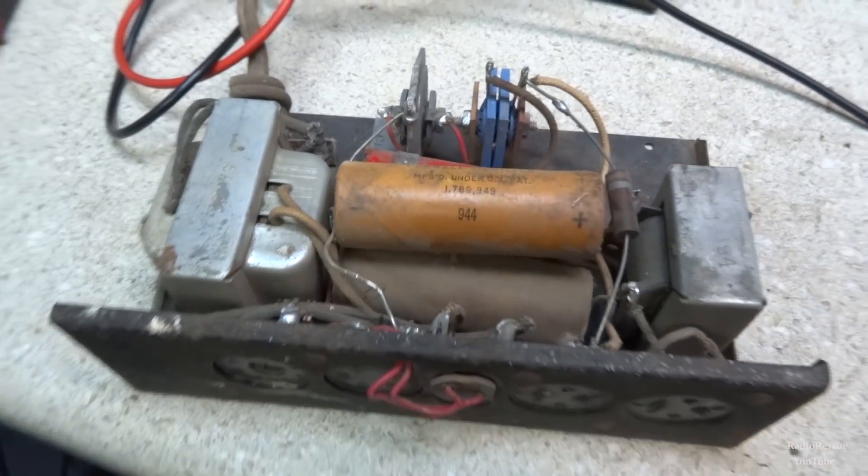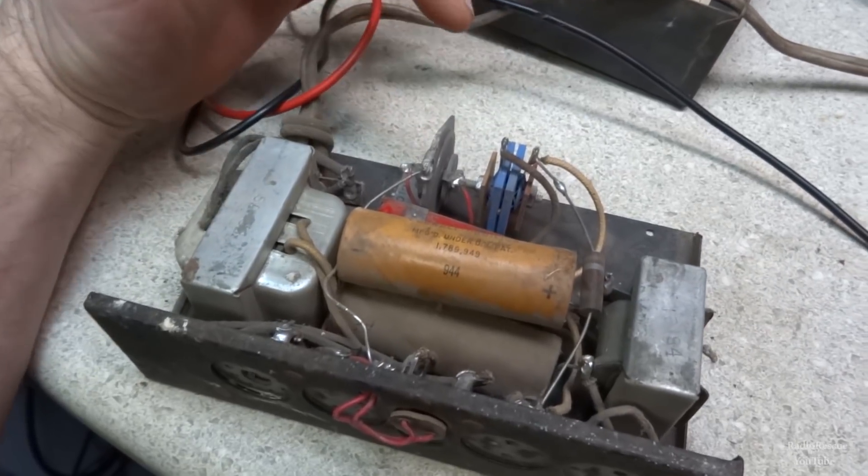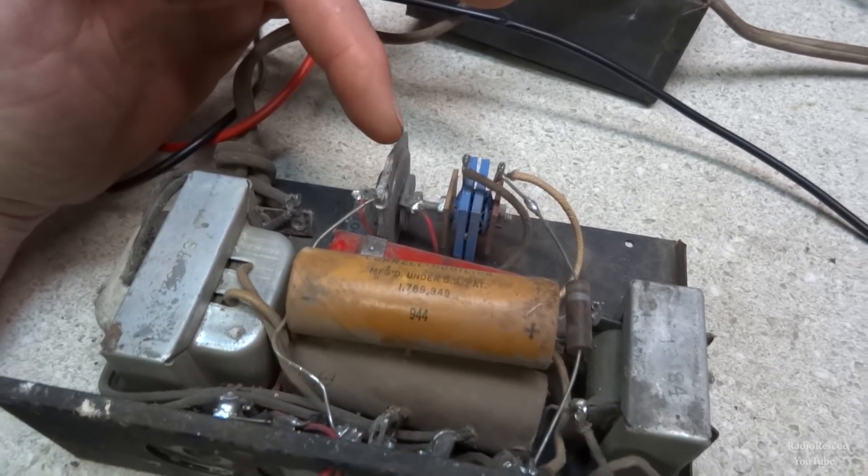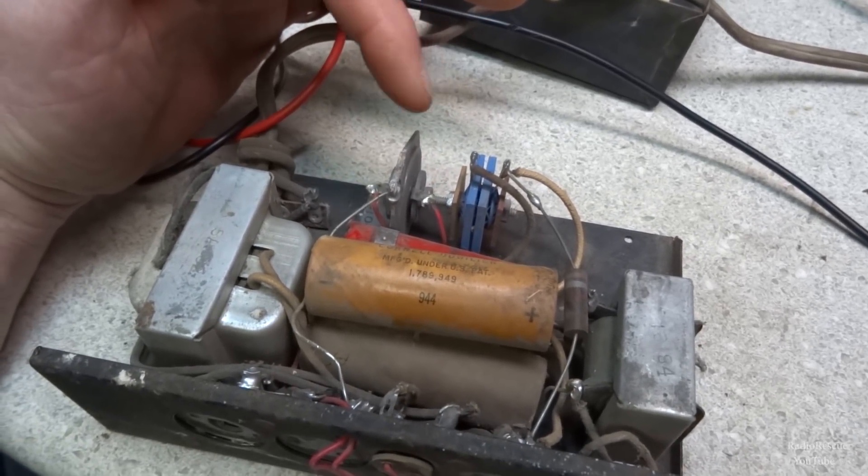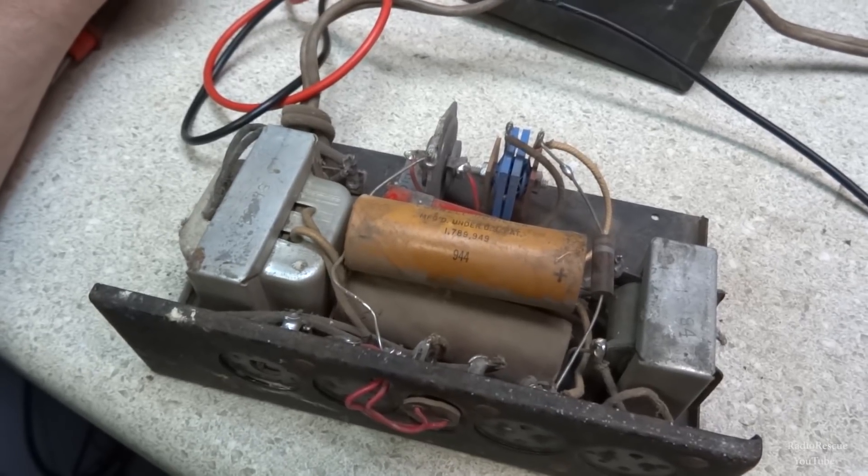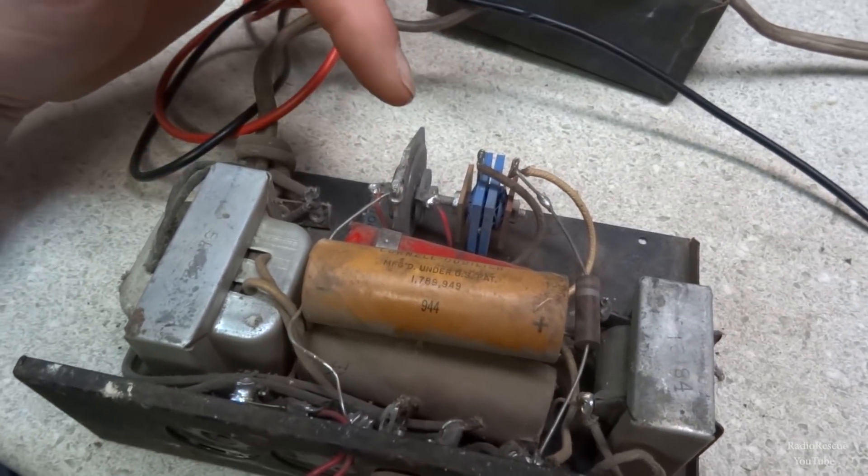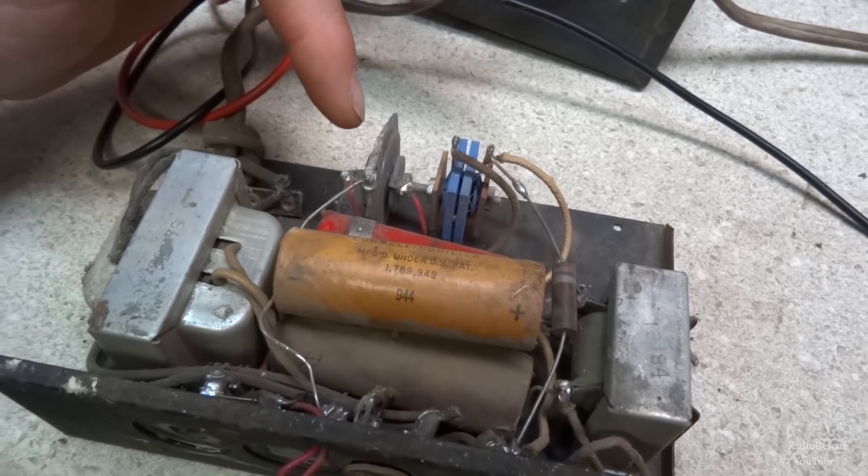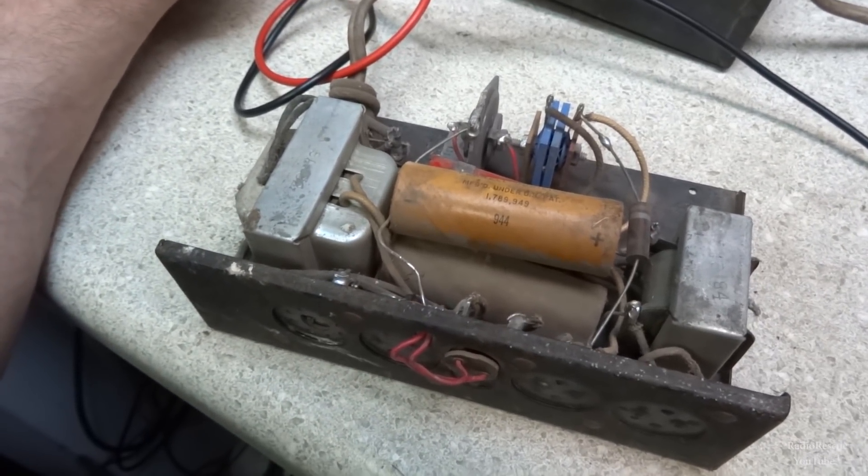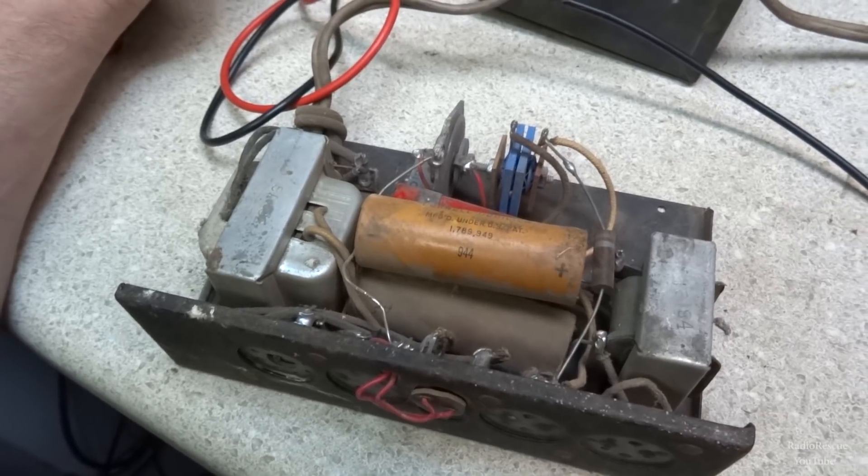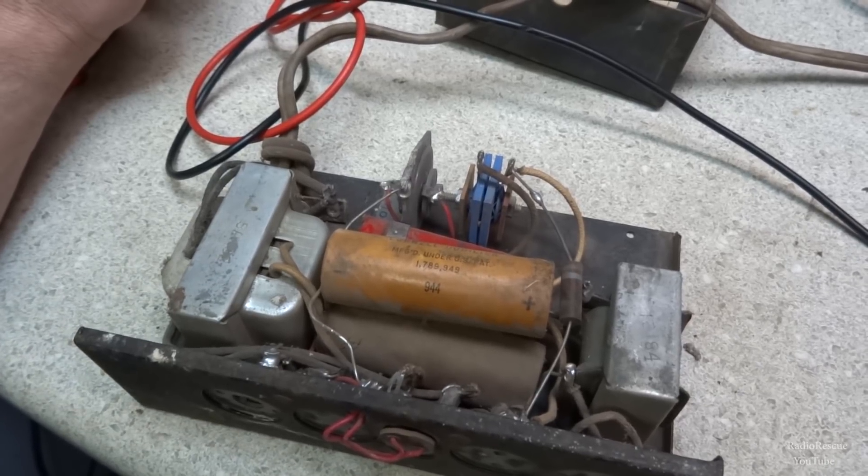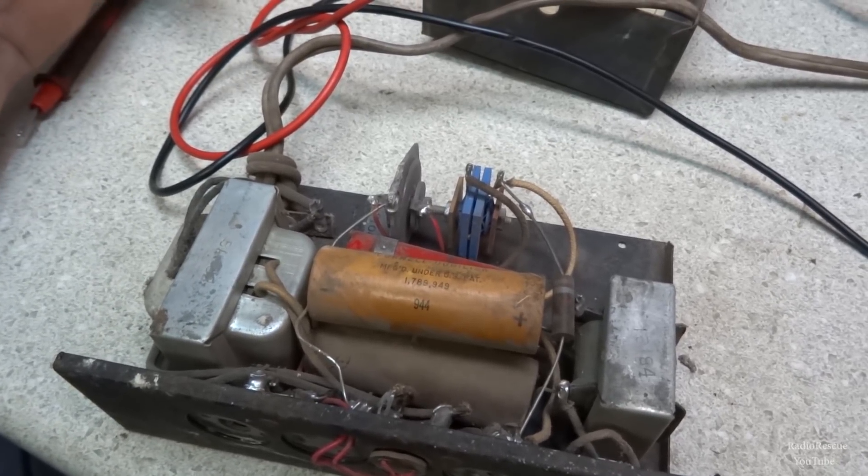Here's our selenium rectifier. What it is, is you've got two selenium rectifiers, one for each circuit. This one's for the A power circuit, which is your filament, and the B+ is over here on that selenium. What I need to do is measure the output power from here and here and see what our voltages are and see if those seleniums have started to go out. Usually you'll get quite a bit of difference in voltage when these get weak.